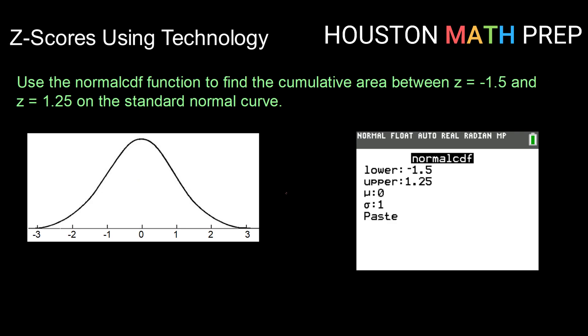Alright, last one for this video. Let's use the normal CDF function to find the cumulative area between a z-score of negative 1.5 and positive 1.25. Between negative 1.5, let's see, here's negative 1.5, and 1.25 would be about right here. So I would be looking for this area here.